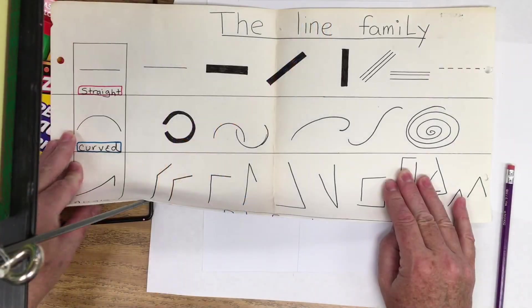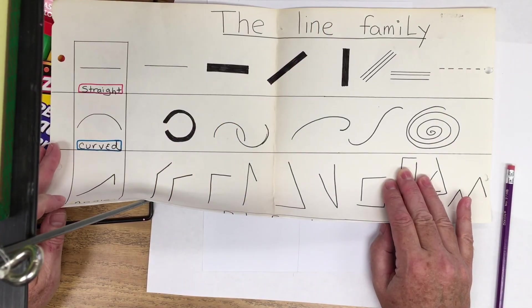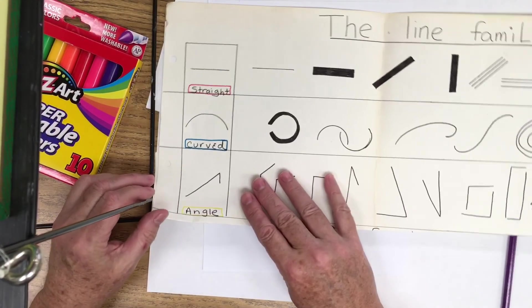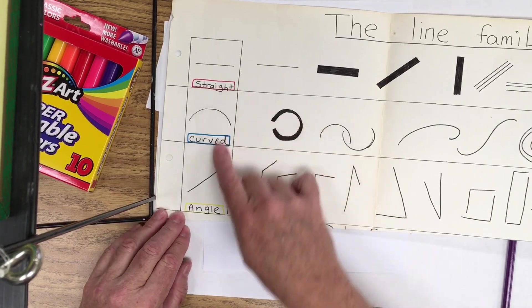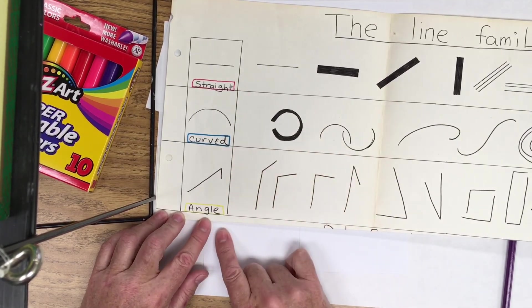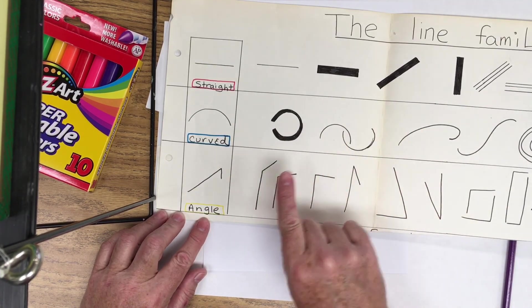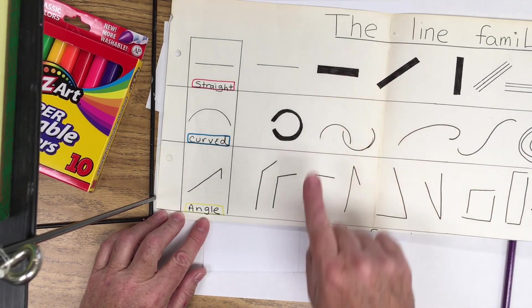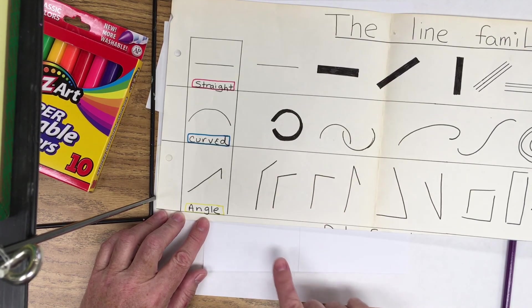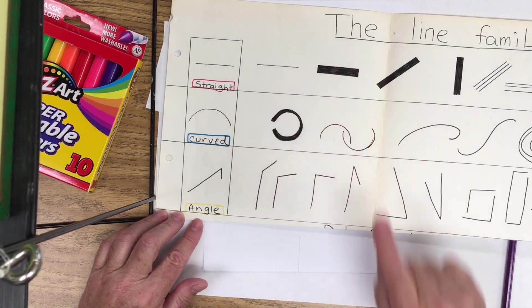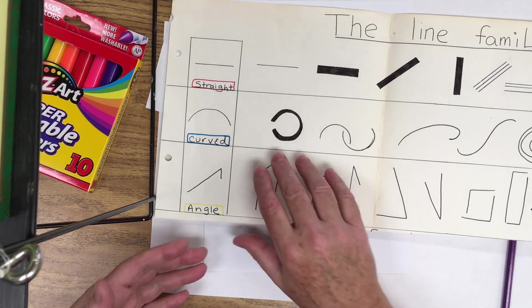Let's take a quick look at some of the line families here. So in the line family, we have lines that are straight, curved, or angled. And you can use these lines separately, maybe just all straight, all curved, all angled, or you can even combine the lines together. But let's just take a quick look at some of these lines here.